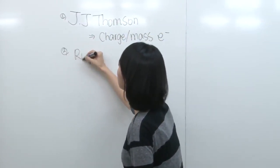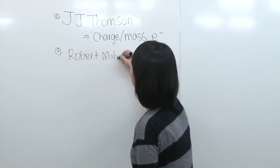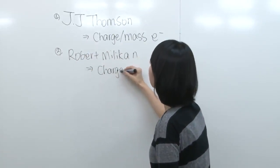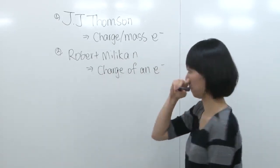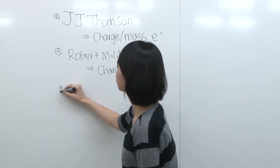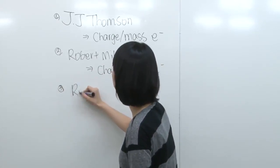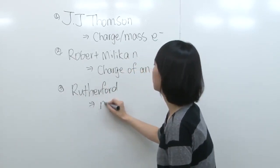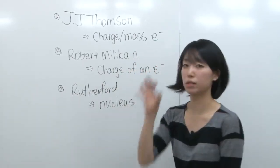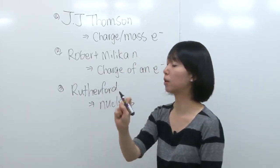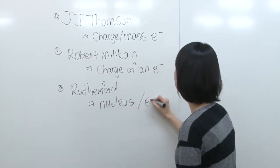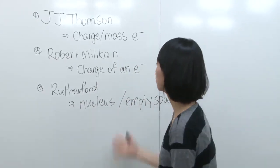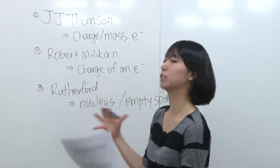Number two was Robert Milliken, and he found out the charge of one electron. Number three was Rutherford, and he found out there's a nucleus at the center of an atom, and also that it's very dense and small in volume, and that the atom is mainly empty space. So he found out the basic atomic structure.